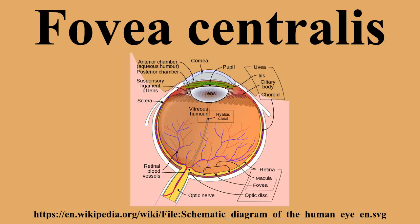The fovea sees only the central 2 degrees of the visual field. If an object is large and thus covers a large angle, the eyes must constantly shift the gaze to subsequently bring different portions of the image into the fovea. Since the fovea does not have rods, it is not sensitive to dim lights. Hence, in order to observe dim stars, astronomers use averted vision, looking out of the side of their eyes where the density of rods is greater.